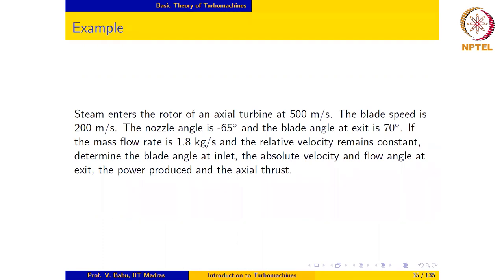The blade angle at exit is 70 degrees. Note that the nozzle angle is the angle at which the nozzle before the inlet to the rotor is oriented, and steam issues from this nozzle and hits the rotor — so essentially this is the inlet flow angle. If the mass flow rate is 1.8 kilograms per second and the relative velocity remains constant, determine the blade angle at inlet, absolute velocity and flow angle at exit, the power produced, and the axial thrust.